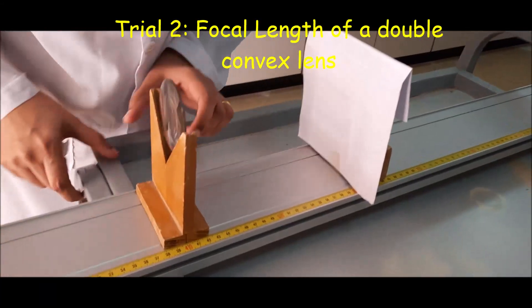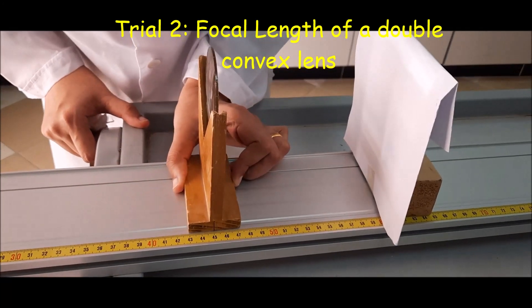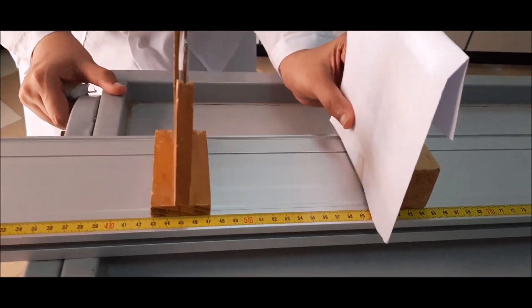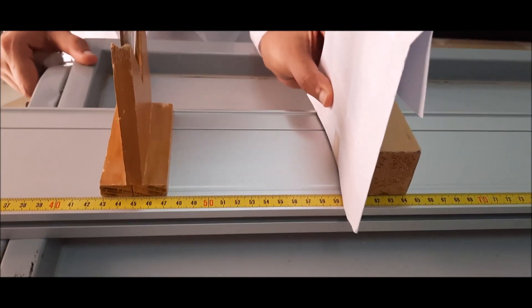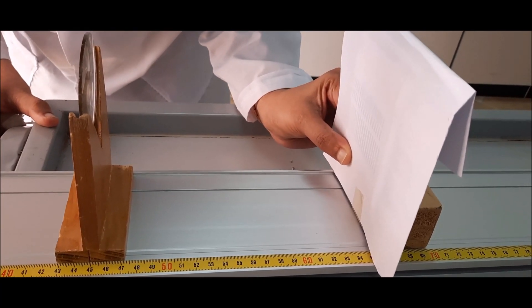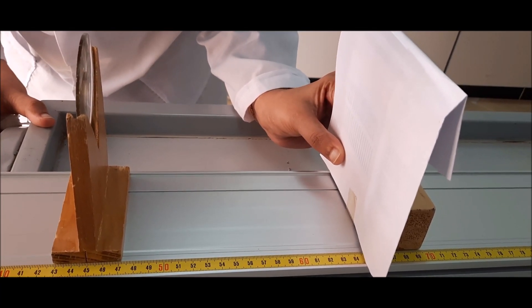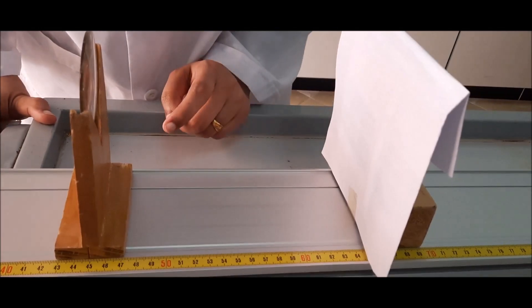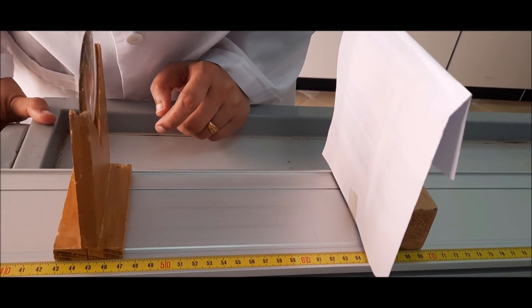For trial 2, I will put the double convex lens at the 45 cm mark and move the screen to get a sharp image of a distant object which is our window. As you can see, it is at the 65 cm mark. So, the focal length is 20 cm.